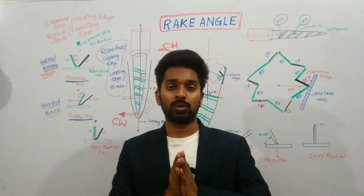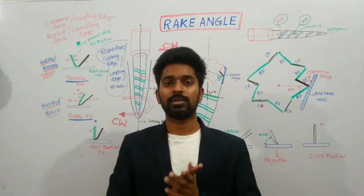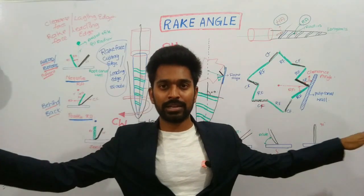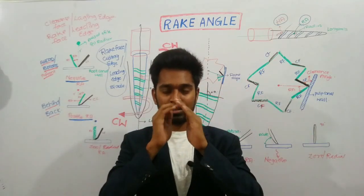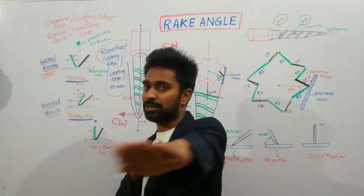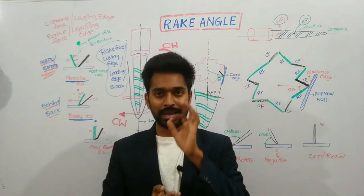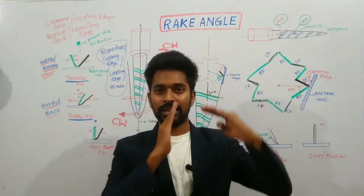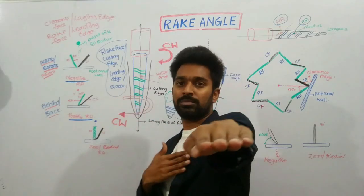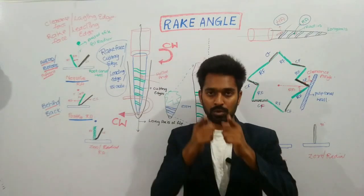Imagine myself as a rotary file. This is the long axis of a file, which is the mid-sagittal plane. Imagine the ends of my fingers — these hands are my cutting edges, and the ends of my fingers are the blades. If I am rotating in a clockwise direction, these are my cutting edges, and this is the long axis of the file. The angle which is formed between the long axis of the file and the cutting edge is called the helical angle.